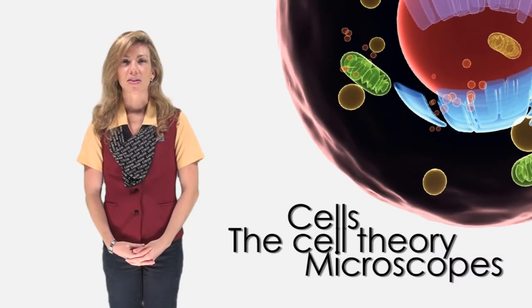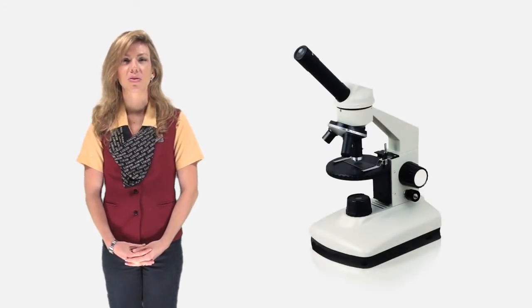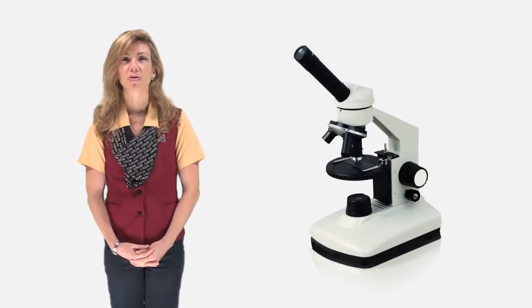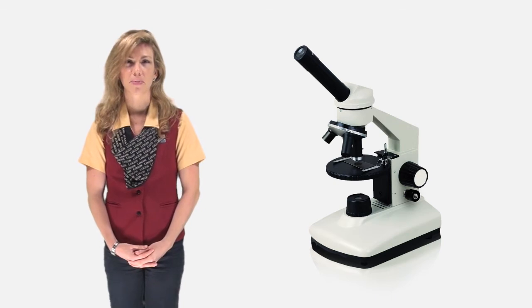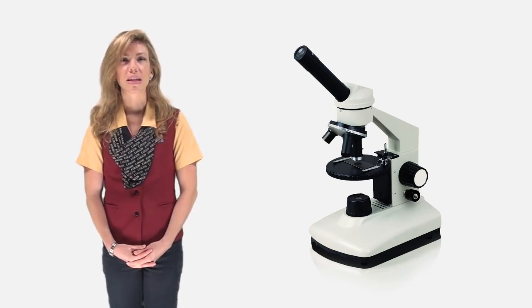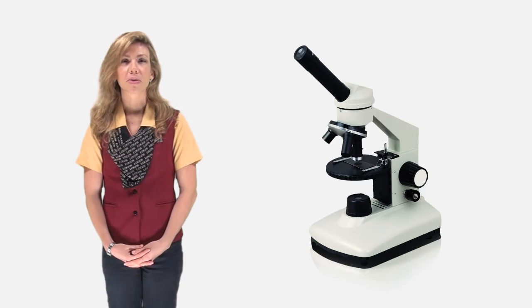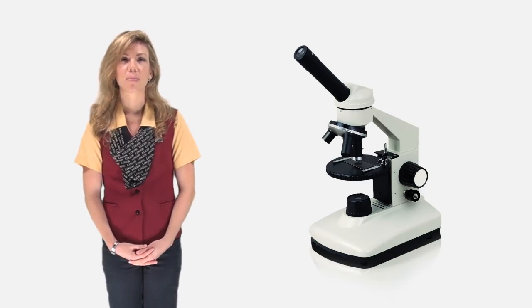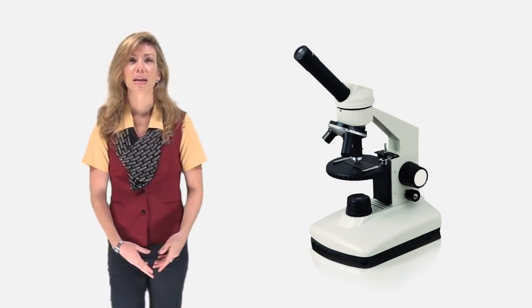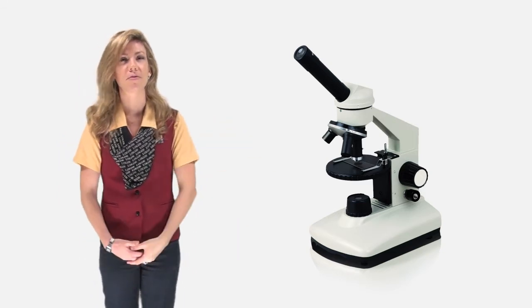Today I'm going to talk about cells, the cell theory, and microscopes. The word microscope is given to the tool used to view objects that are too small to be seen with the naked eye. They make small things look larger using lenses to bend the light. This is called magnification. A simple microscope has one lens, but a compound microscope, like the one in this picture, uses two lenses at once to magnify an image.